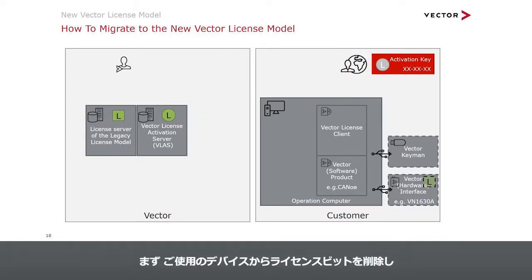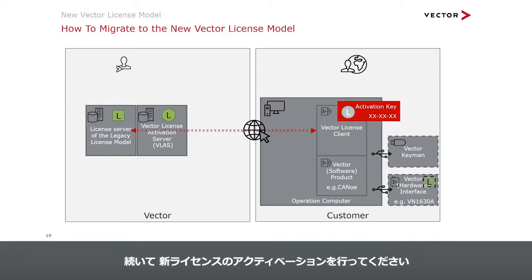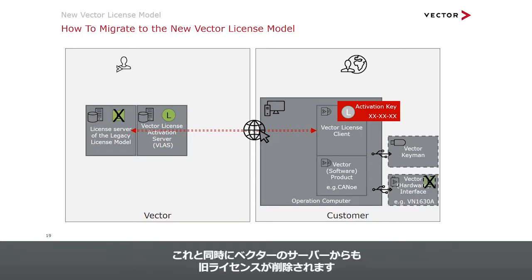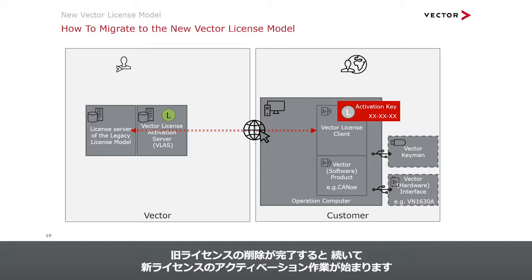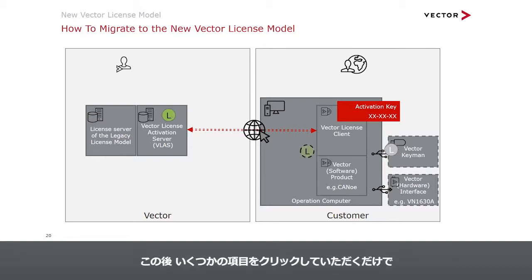With this activation key, instead of just activating the new Vector license, you must first delete the legacy license identification from your device. At the same time, the license will be removed from the Vector server. This is reported back to your Vector license client and then allows the activation of the new Vector license that is referenced in the activation key. From here on, the procedure works like an activation of a completely new Vector license.